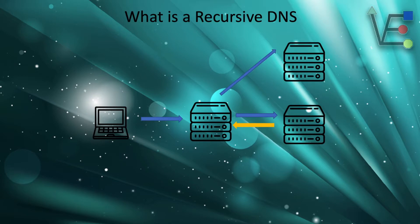Your DNS server sends that request to that server. If that server does not know the IP address of virtualizeeverything.com, it will reply back: try the IP address of this server.